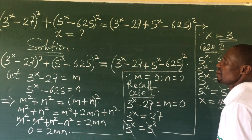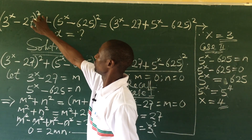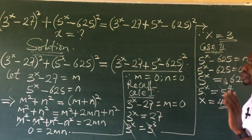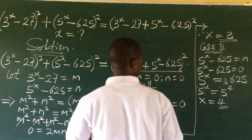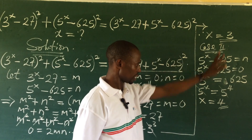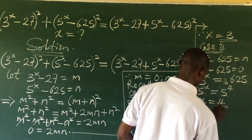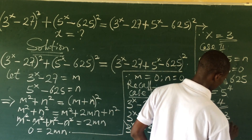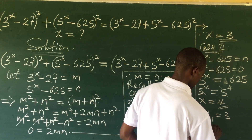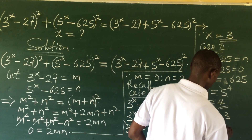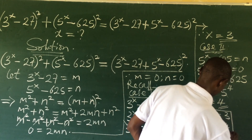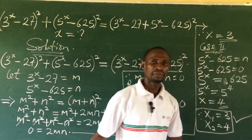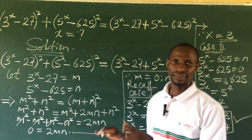The highest power of the variable in the system is 2, so we expect two values. Therefore x₁ = 3 and x₂ = 4. These are the two possible values of x that satisfy this exponential equation.